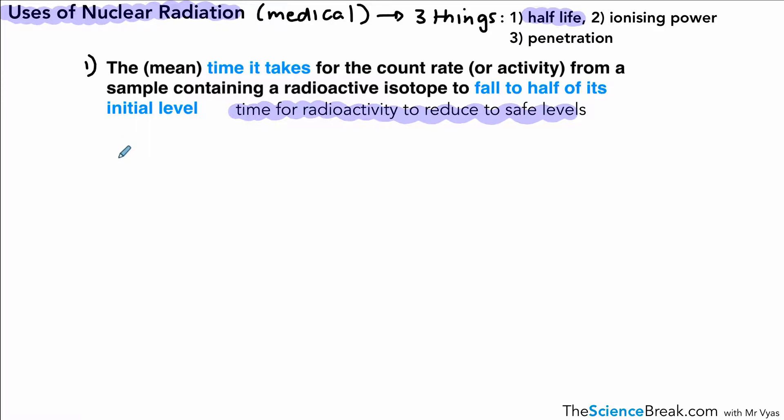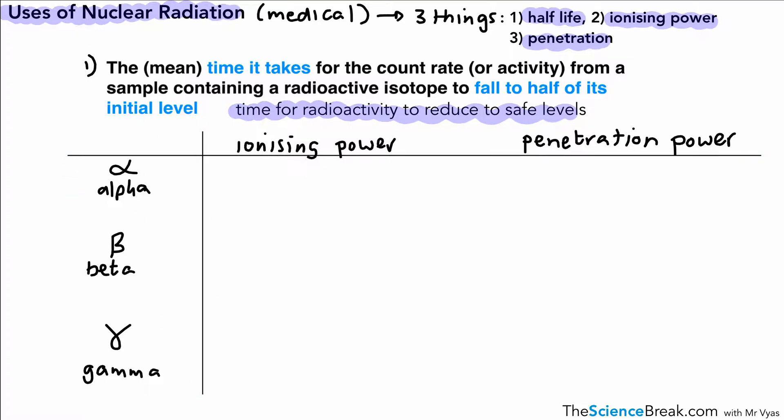In terms of the ionizing power and the penetrating power, we need to remind ourselves of the features of alpha, beta, and gamma radiation. Alpha radiation has a very high ionizing power and a very low penetrating power - it's stopped by skin.